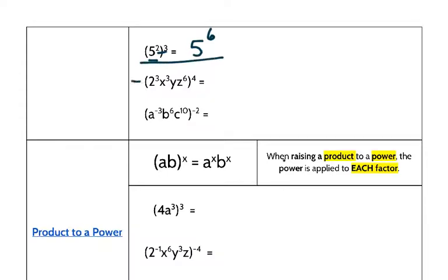Moving to the next problem: this 4 has to go with every exponent, every element inside. I have a base of 2, so I write my 2. I take my 3 and multiply it by my 4, which is 12. Then I take my x, write my base. The exponent is 3 on my x and I multiply it by my 4, which is also 12.